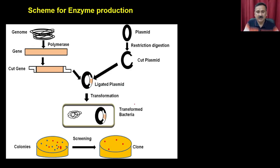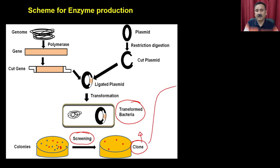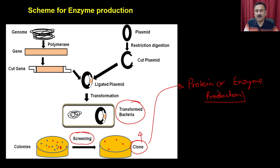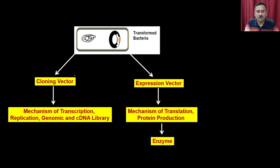What we have discussed so far is that you are going to get the transformed bacteria or the transformed host that you put for screening. Once you have screened and obtained the clone-containing host cells, this clone can be used for protein or enzyme production. Now when we talk about enzyme production, it will depend on the type of host you are going to use. As far as cloning is concerned, it can be done into two different types of vectors: a cloning vector or an expression vector.